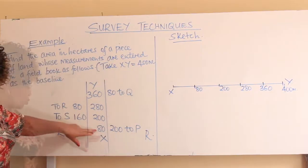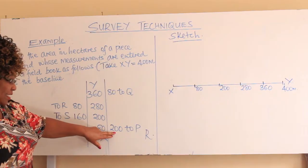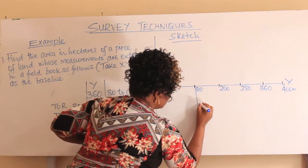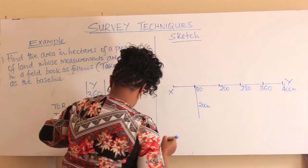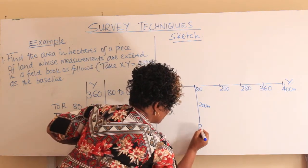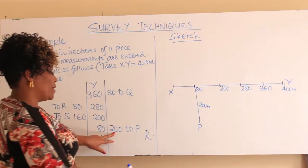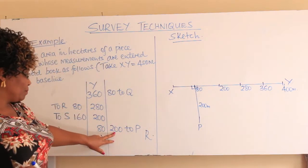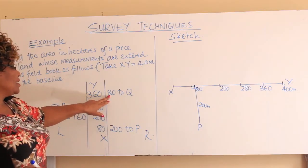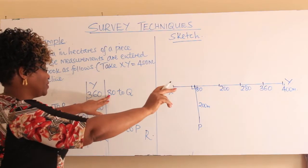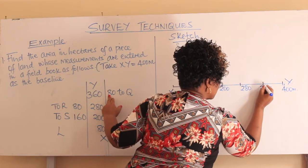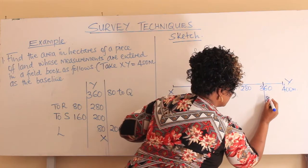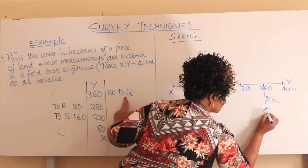At 80, we have an offset to P. At 200, we have an offset of 200 meters to P — let's assume our P is somewhere there. Remember these offsets meet perpendicularly — at 90 degrees — with the baseline. Then at 360, we have an offset to Q, and it is 80 meters. The offsets to the right go below the line.